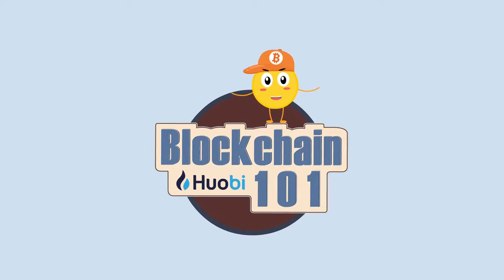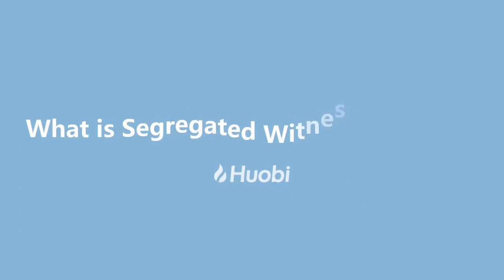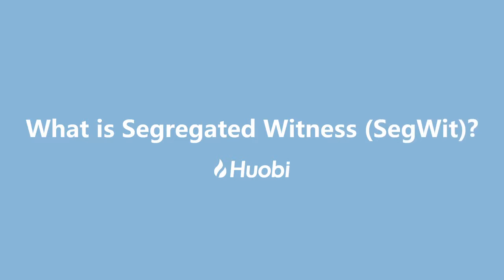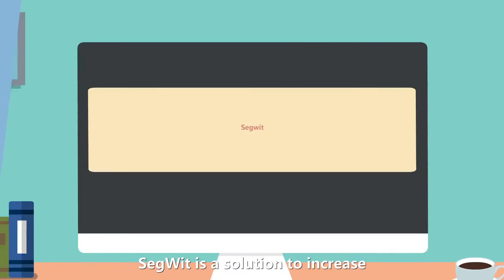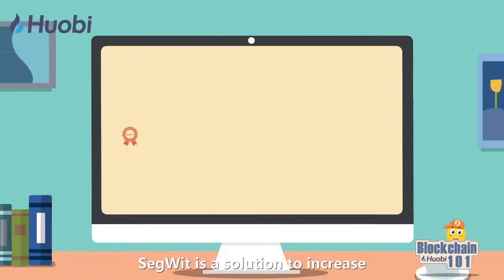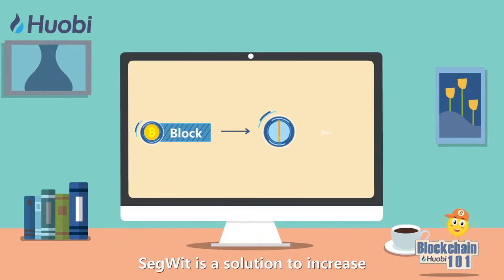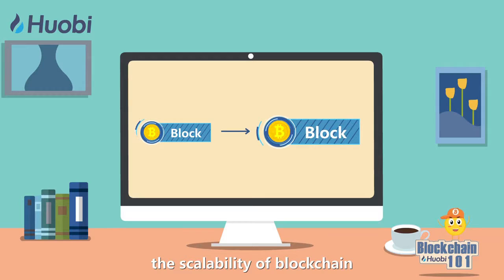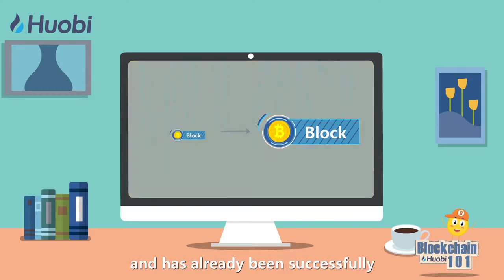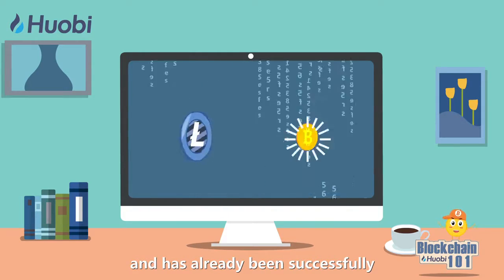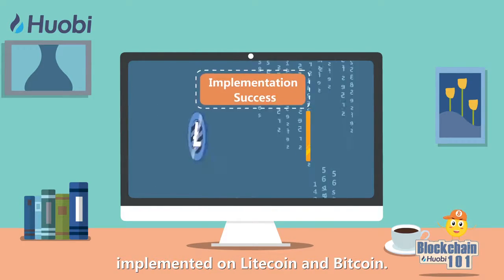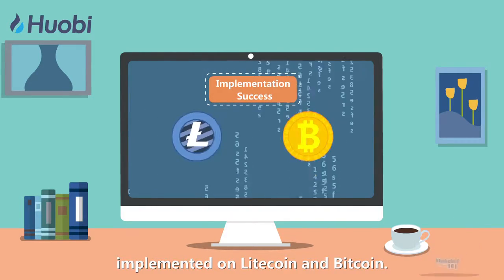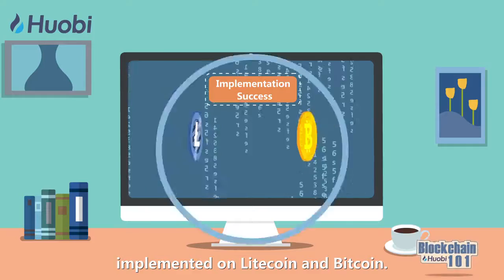One minute a day. Blockchain 101. What is Segregated Witness? SegWit is a solution to increase the scalability of blockchain, and has already been successfully implemented on Litecoin and Bitcoin.